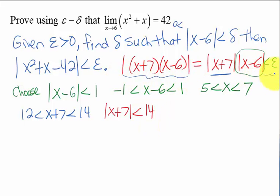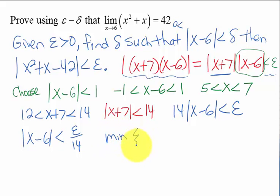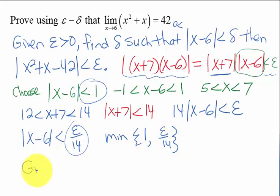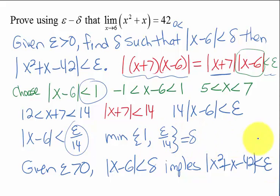So I can say the absolute value of x plus 7 is less than 14. Coming back to this piece needing to be less than epsilon: it is less than 14 times the absolute value of x minus 6, and I know that would be less than epsilon. So the absolute value of x minus 6 will be less than epsilon over 14. I had two different restrictions, so I'm going to want the minimum of 1 and epsilon over 14. Given epsilon greater than 0, then x minus 6 less than delta implies that x squared plus x minus 42 is less than epsilon. We want delta to be the minimum of those two numbers, and then by the definition of limit, we've shown that that limit is 42.